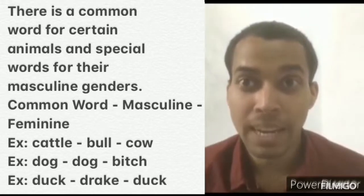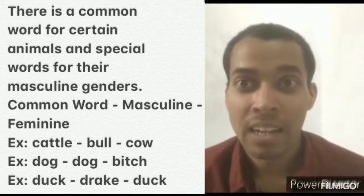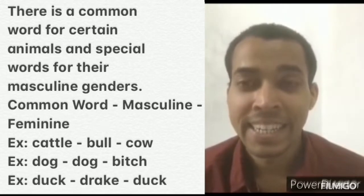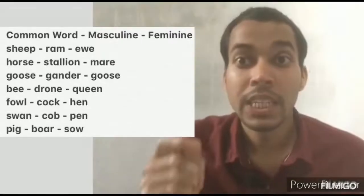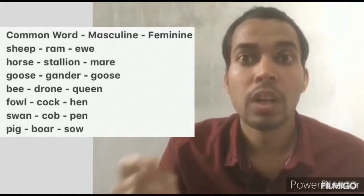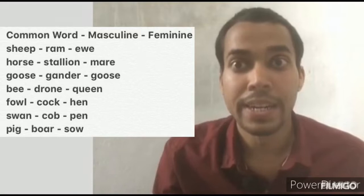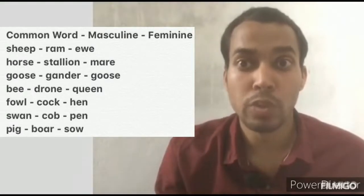For example: cattle — bull, cow. Dog — dog, bitch. Duck — drake, duck. Sheep — ram, ewe. Horse — stallion, mare. Goose — gander, goose.